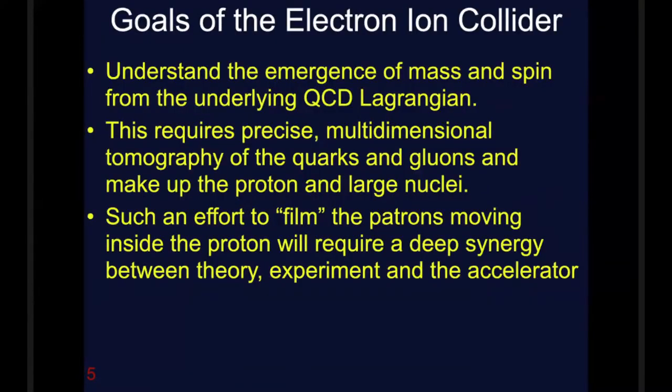So what are the goals of the Electron Ion Collider? Principally we want to understand how the mass and the spin arise from the underlying Lagrangian. Now to do this requires very precise multi-dimensional tomography of the quarks and gluons to make the proton and large nuclei. Essentially what we're trying to do is to film the partons moving inside the proton and this will require very deep synergy between theoretical methods which are proposing new ways to look inside a complex quantum system, a great deal of experimental work and of course the accelerator.